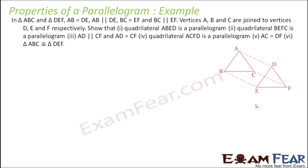Next question: triangles ABC and DEF where AB equals DE, AB is parallel to DE, BC equals EF, and BC is parallel to EF. Vertices of ABC and DEF are joined respectively. We need to prove that ABED is a quadrilateral — we can prove two sides are equal and parallel, making it a parallelogram.